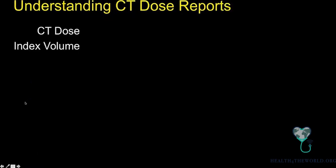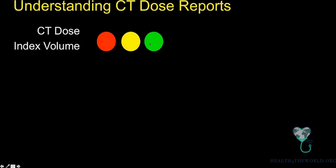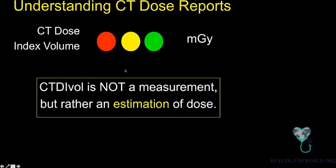CT dose reports can be intimidating. First, there's the CT Dose Index Volume — think of it as how hot is your scanner running? Is it high dose or low dose on a slice-by-slice basis? Each value represents a slice — a hot slice or a cold slice — measured in milligray, which is exposure. Milligray is exposure; millisieverts is cancer risk. Importantly, this is not a measurement — it's an estimation. The scanner says: given these parameters, if we assume you are a phantom, this is approximately what the dose would be. You don't have a dosimeter in there with the patient, so take the number with a grain of salt.